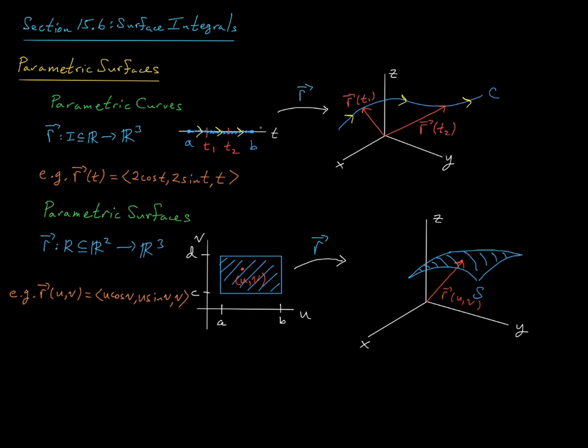Now in terms of dimensionality, the dimension of the domain for a parametric curve is just one, right? It's a one-dimensional domain. So this wire here is one-dimensional. So when you deform it, you get this one-dimensional path c in r3.